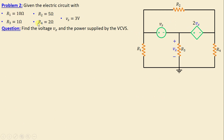Let's move on to problem number two. Consider this network consisting of four resistors labeled R1 through R4, along with an independent voltage source Vs. We can also observe the presence of a dependent source, specifically a voltage controlled voltage source. The question is to find the voltage vx across resistor R3 and the power supplied by the voltage controlled voltage source.